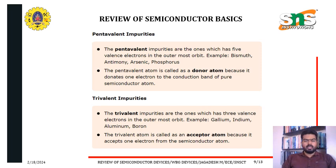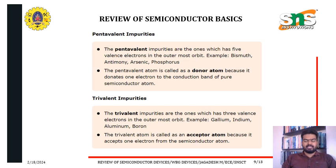Extrinsic semiconductors have two types of impurities: pentavalent and trivalent. Pentavalent impurity has five valence electrons in the outermost orbit — examples are bismuth, antimony, arsenic, and phosphorus. The pentavalent atom is called a donor atom because it donates one electron to the conduction band. Trivalent impurity has three valence electrons — examples are gallium, indium, aluminium, and boron. The trivalent atom is called an acceptor atom because it accepts one electron from the semiconductor atom.